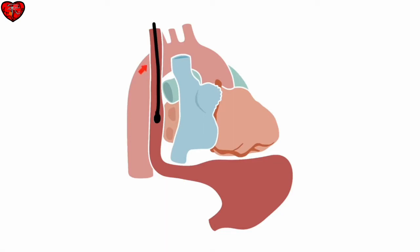In order to visualise the descending thoracic aorta beyond the arch, we need to turn the TEE probe physically through 180 degrees so that it's pointing posteriorly. It's very important when we do so to make sure that the probe is straight — in other words, that there's no flexion at the tip — as this can be very uncomfortable for the patient and runs the risk of causing trauma to the oesophagus. Once we've turned the probe, we can then advance and withdraw it as necessary to image the whole length of the descending thoracic aorta, right down to the level of the diaphragm.